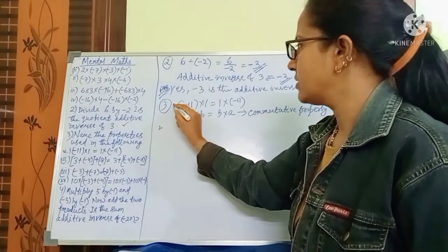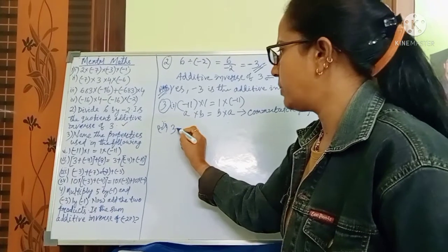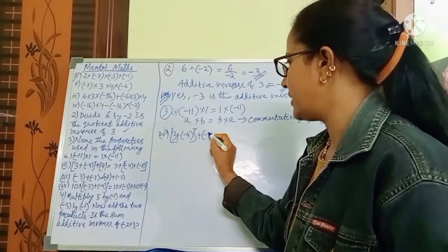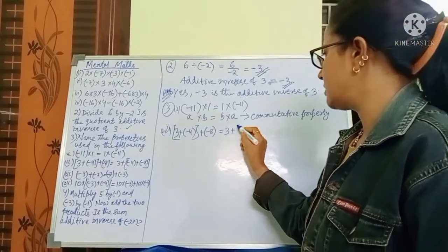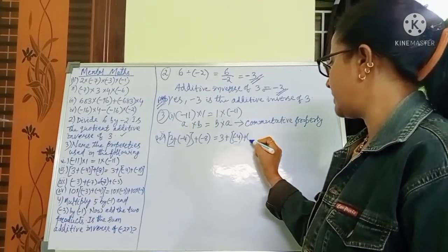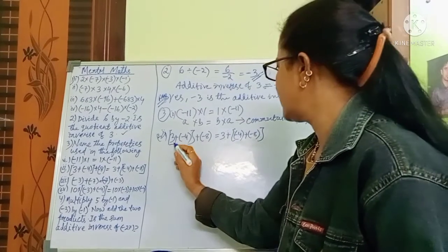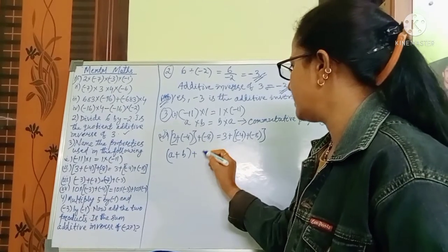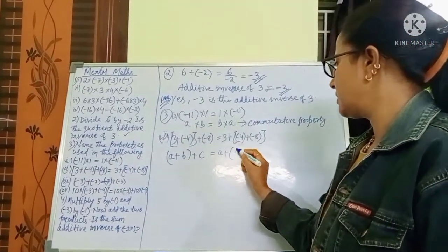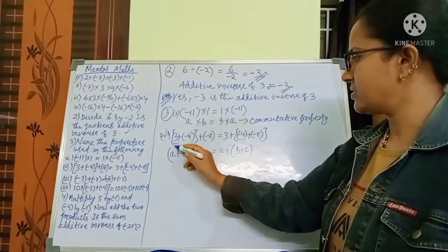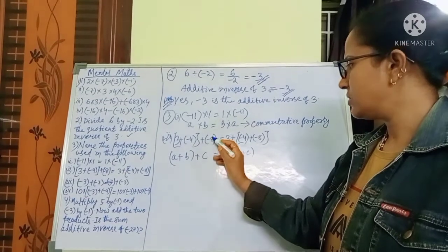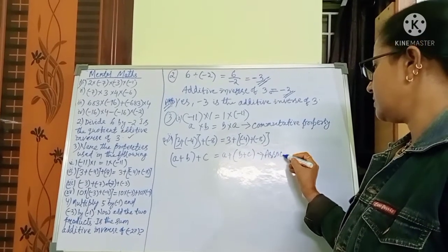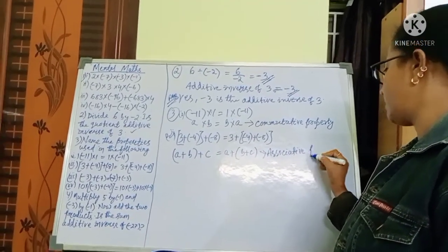The next one: 3 plus minus 4, plus of minus 8, equals 3 plus minus 4 plus minus 8. Here A is 3, B is minus 4, C is minus 8. This is A plus B plus C — which property is this? It is the associative property.